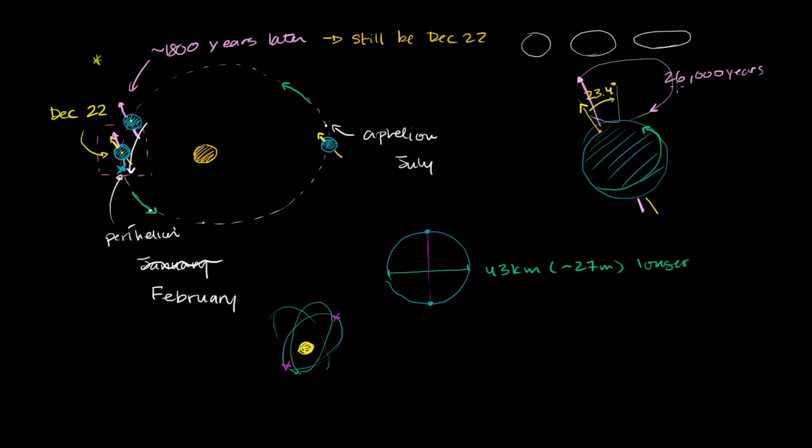However, it does not take 26,000 years for whatever our date of perihelion is today. So it's in January. I actually don't know the exact date. You could look that up. But whatever that date is in January, it will not take 26,000 years for it to be that date again.